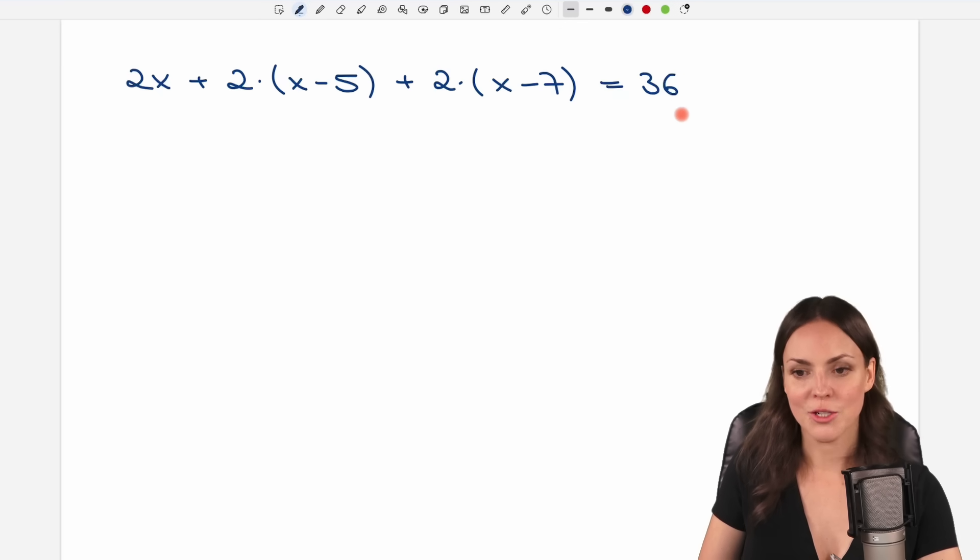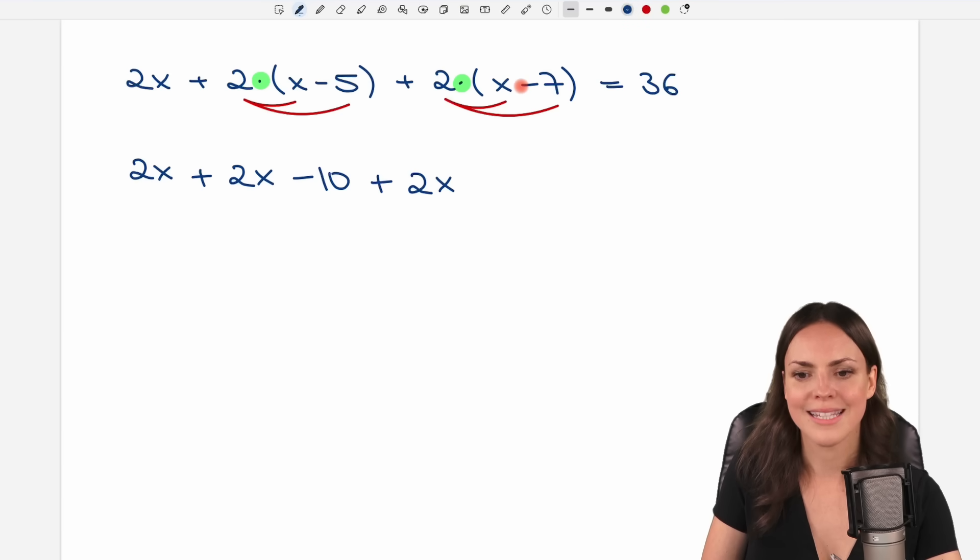So let's take our equation and let's solve this for x. Maybe we get rid of the parentheses first. So we have our 2x here and then we multiply the 2 by every element in our parentheses. 2 times x equals 2x and 2 times negative 5 equals negative 10. Same thing here, 2 times x is 2x and 2 times negative 7 is negative 14. On the other side we have 36.